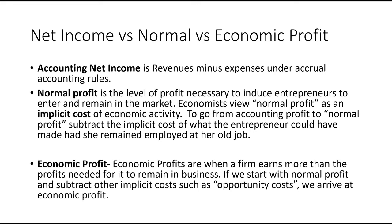Review: Accounting net income is revenues minus expenses under accrual accounting rules. Normal profit is less than that — it's the level of profit necessary to induce entrepreneurs to enter and remain in the market. Economists view normal profit as an implicit cost of economic activity; to get it, subtract the implicit cost of the entrepreneur's foregone salary. Economic profit is when a firm earns more than needed to remain in business — it's a higher hurdle than normal profit.